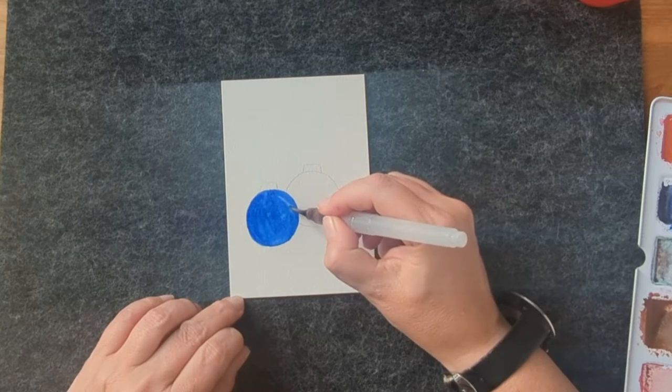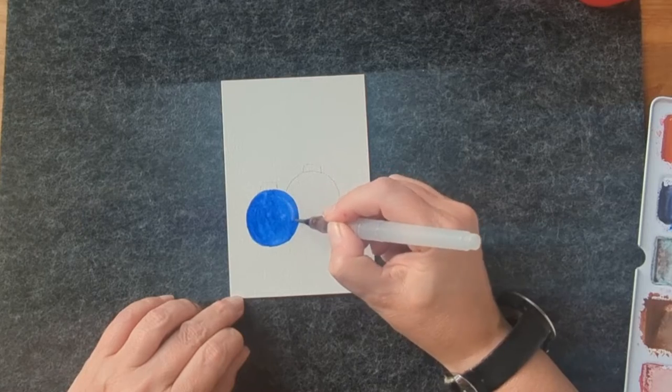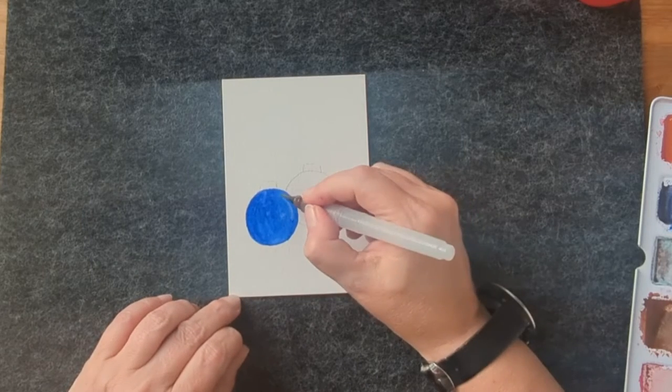Now I use a dry brush and pick up some color that creates a glow on the bauble.